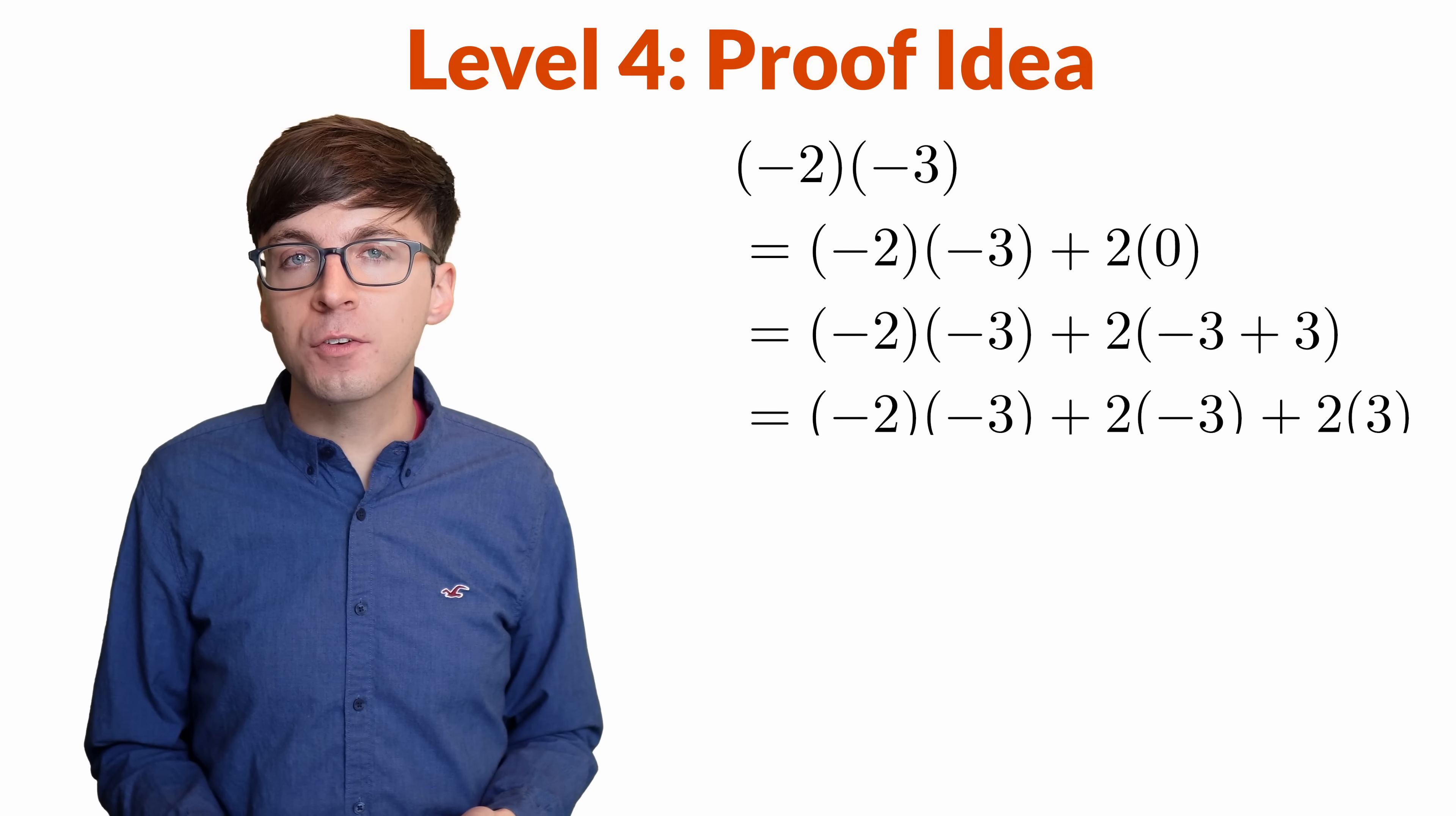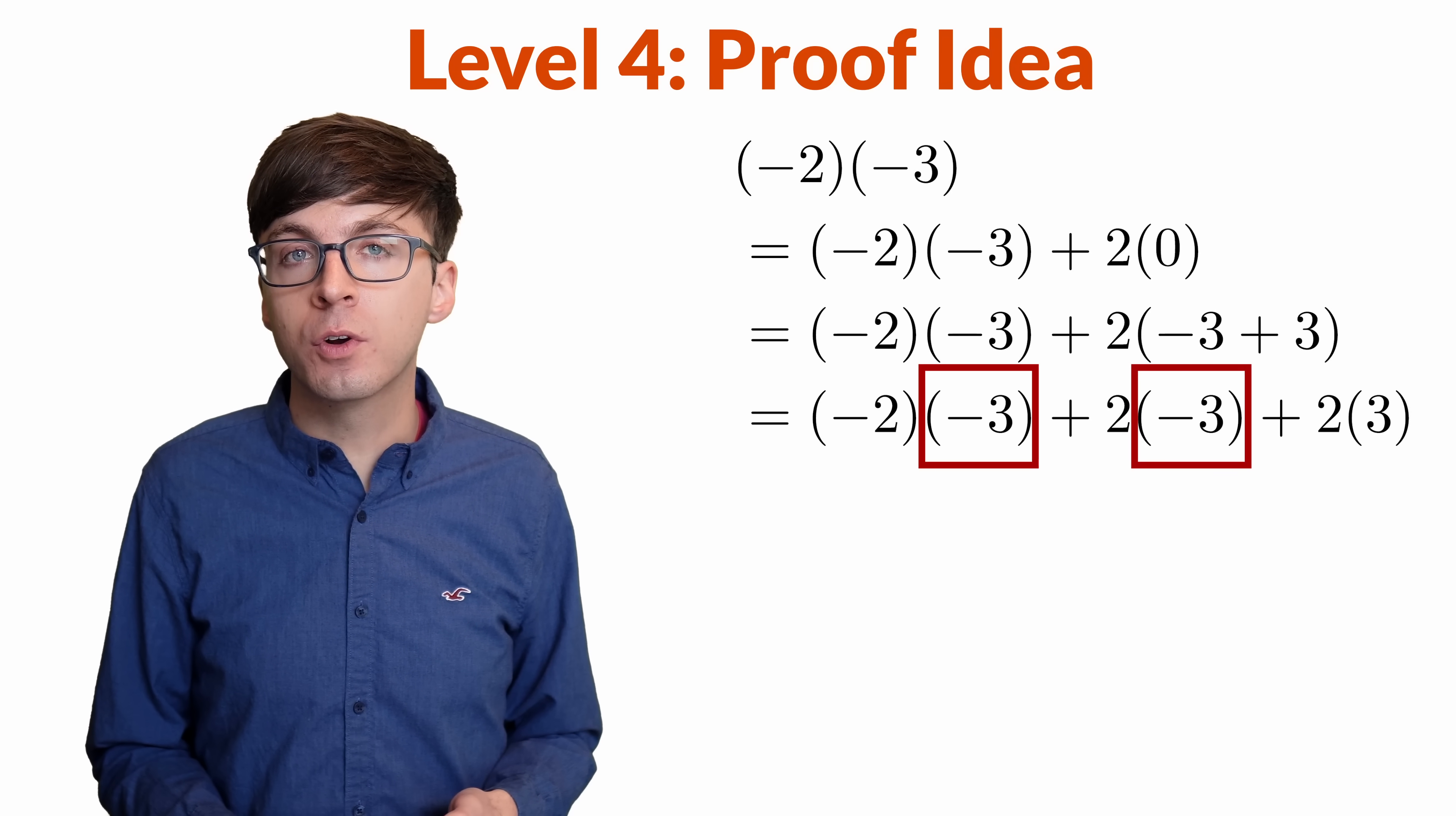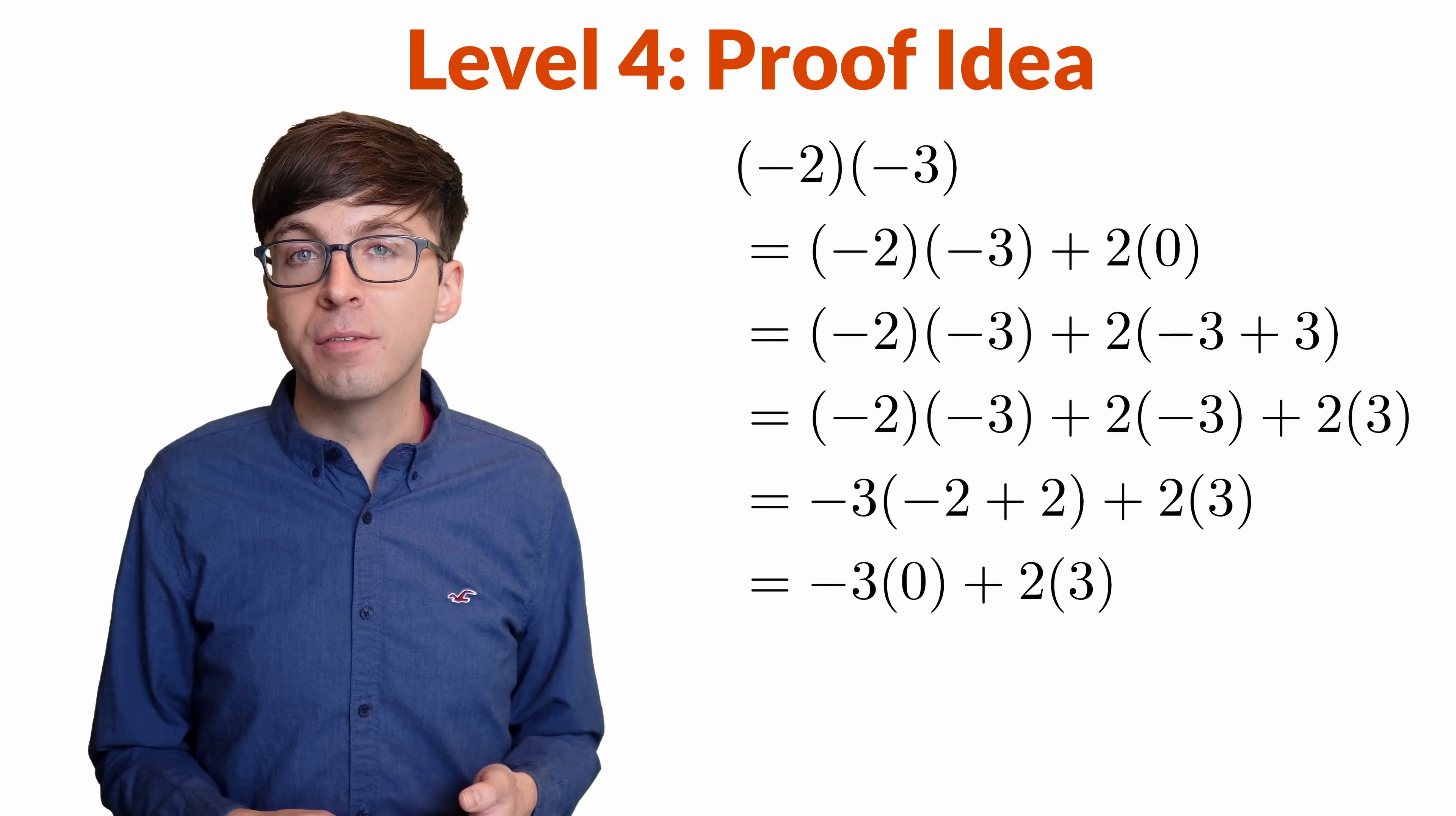Next, let's multiply out that last term using the distributive property. We now have negative 2 times negative 3 plus 2 times negative 3 plus 2 times 3. Next, we can factor out the negative 3 from those first two terms using the distributive property again. Now we have negative 3 times negative 2 plus 2 plus 2 times 3.